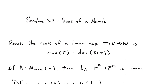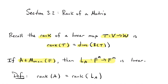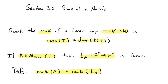Start by recalling that the word rank has already been defined for linear maps. If you take a linear map from V to W, the range of that map is a subspace of W. Every subspace has a dimension, and that dimension is called the rank of the map T. So I want to define what I mean by the rank of a matrix. Every matrix defines a linear map — left multiplication by that matrix on the coordinate vector spaces — so I define the rank of the matrix to be the rank of that linear map L sub A, which is the rank of the left multiplication operation that the matrix defines.